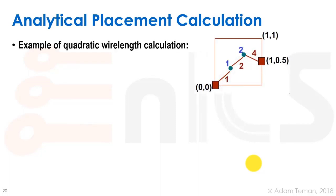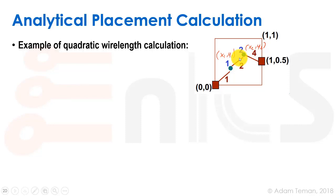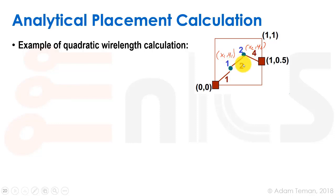Now let's walk through a numerical example of how this calculation is done. In our model we have fixed pads: one pad at (0, 0) and one pad at (1, 0.5). We have two gates at unknown locations (x1, y1) and (x2, y2) — those are the parameters we want to find. Each net also has a weighting factor: the net between the pad and gate 1 has weight 1, while the net between gate 1 and gate 2 has weight 2.